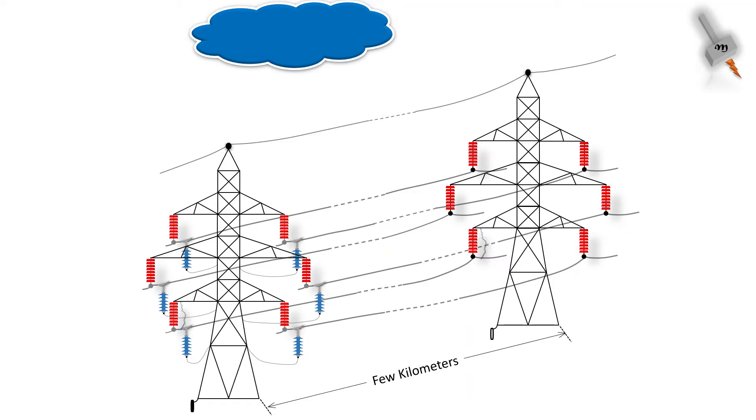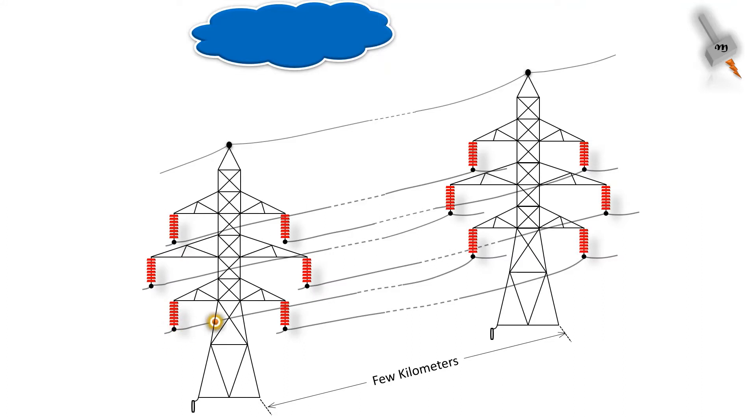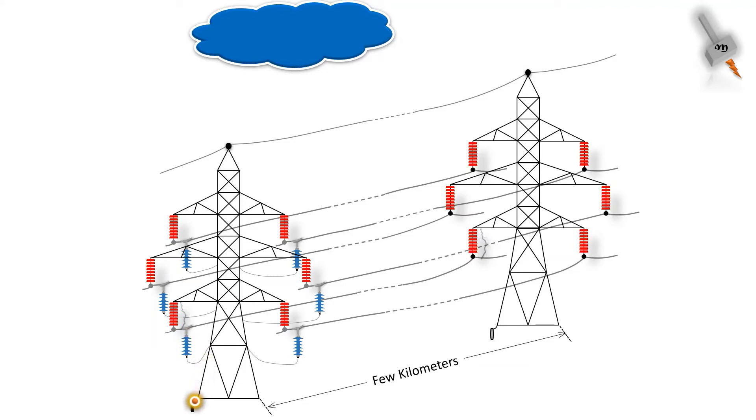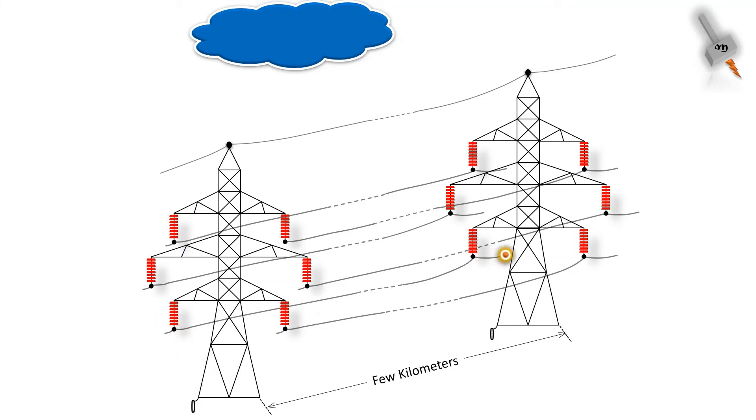This flashover will induce a surge in the power lines. It can happen that the same tower where the flashover happened, a lightning arrester will be installed. Then in that case, the surge will be grounded quickly. If there are no lightning arrester installed in the tower, the surge will continue to travel over the power lines. If it finds a tower with lightning arrester, it will be grounded. Else, it will go to the substation where the dead front arrestor will ground it.